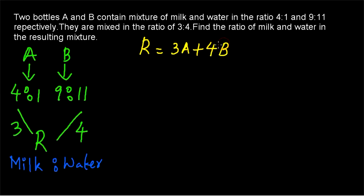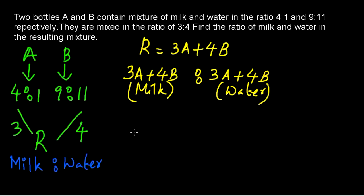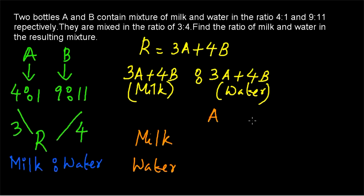We have to find the ratio of milk and water in R. The resultant R will have 3A plus 4B parts of milk and 3A plus 4B parts of water. So the ratio of milk to water in R will be equal to (3A + 4B) of milk to (3A + 4B) of water. Now let's proceed. First, we have to find out the milk and water content in A and B respectively, and we can form a table for easiness.